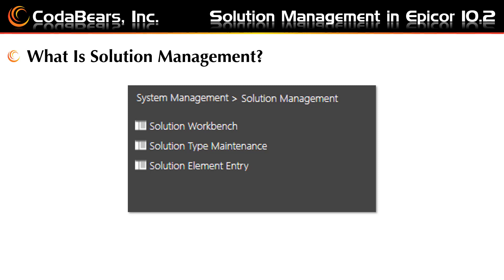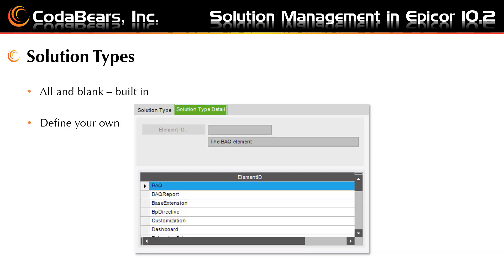A CAB file is a file with the extension .cab and is a compressed file which can contain a digital signature. In the solution management groups shown in the previous slide, you can open the menu item for solution types. Here you can use the built-in solution types or define your own solution types.